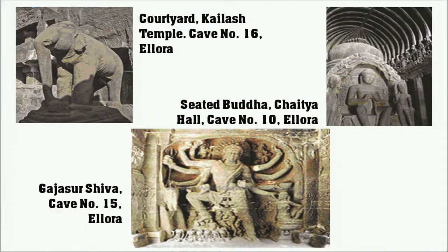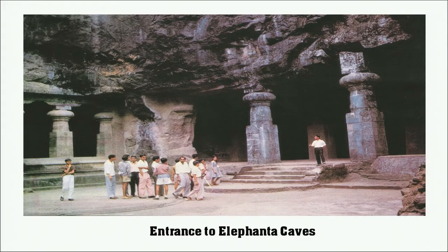Nearby we have Ellora, again a world heritage site and a very unique site where all three religions exist together, built over a huge span of time. You have Hindu caves, Buddhist caves and Jain caves — Shiva and Buddha are both represented there. You also have the Kailash temple there. Elephanta is an island located near Mumbai where a great many sculptures were made.